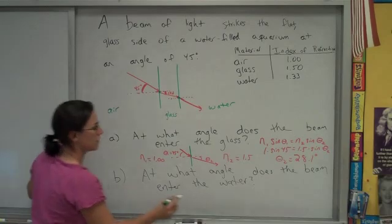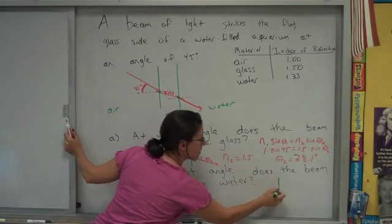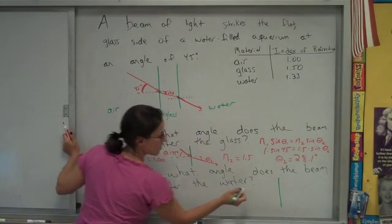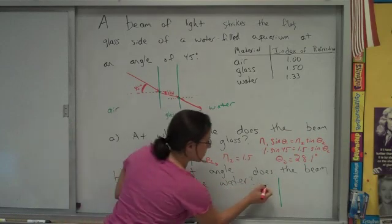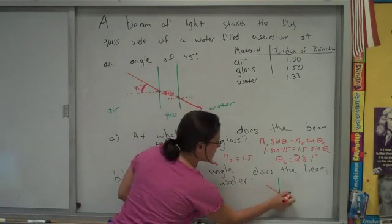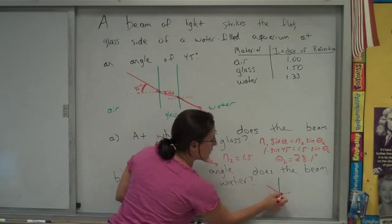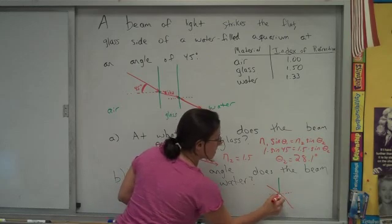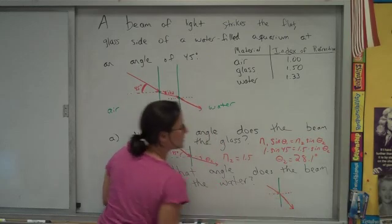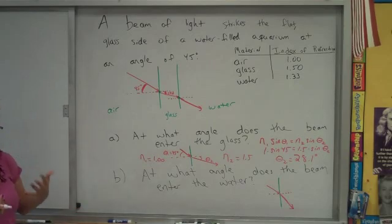So the second boundary is glass to water. So glass, draw the normal line, show it bending away as it goes into the water.